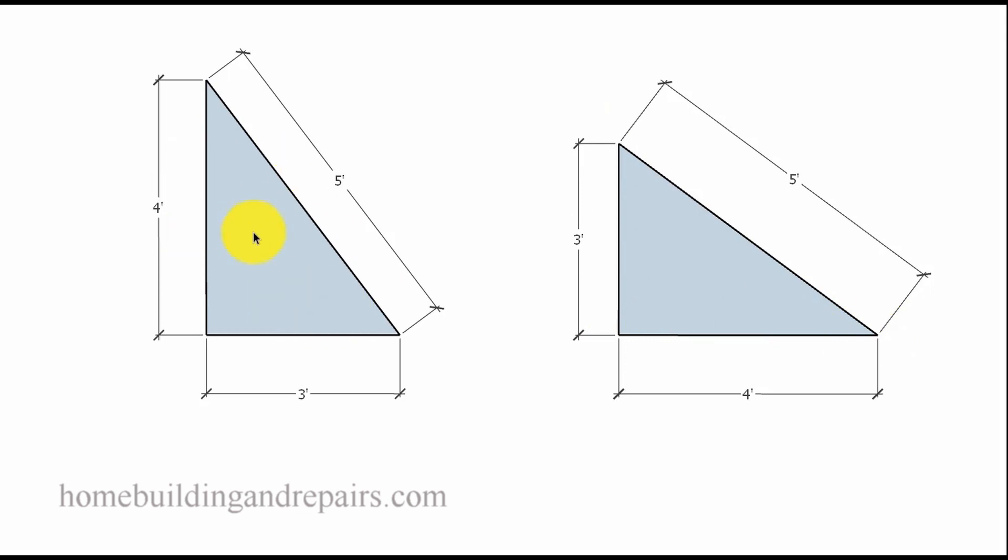And of course this can be in either direction. The triangle can be turned around, rotated, flipped around however you need it to be and it will create a 90 degree corner.